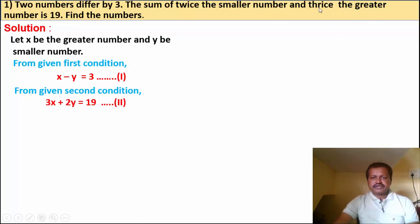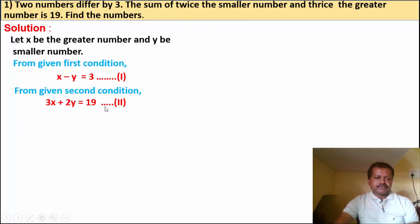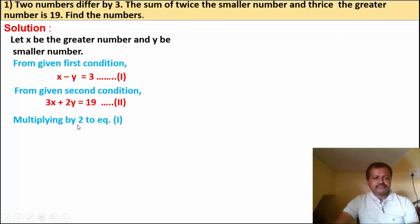3x is thrice the greater number and 2y is twice the smaller number. Their summation is 19. We now have 2 equations. To solve, we note y has coefficient minus 1 in equation 1 and plus 2 in equation 2, so we multiply equation 1 by 2.